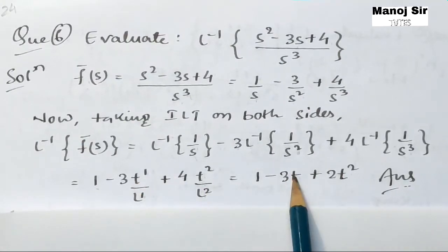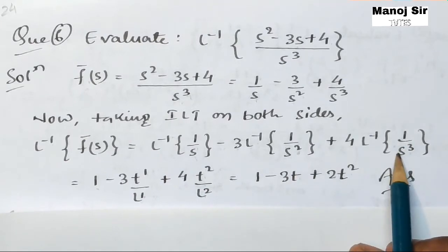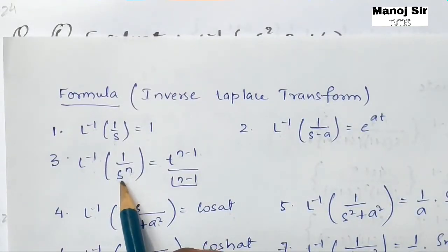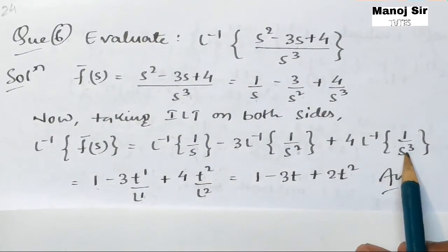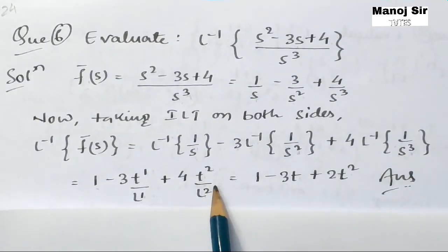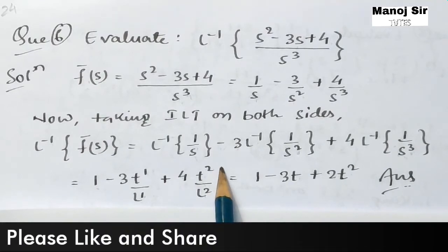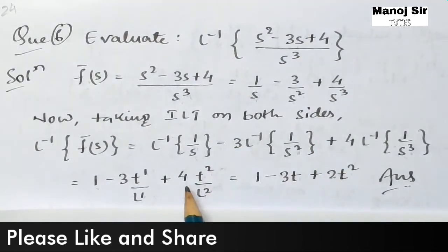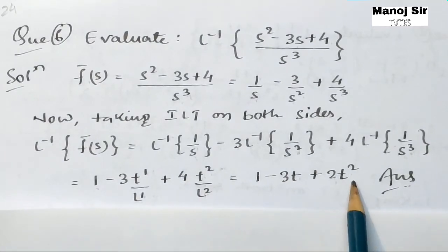For the last term, the inverse Laplace transform of 1/s³: here n = 3, so the formula gives t^(3-1) / (3-1)! = t² / 2! = t² / 2. Therefore 4 times t²/2 equals 2t². Combining all terms, the final answer is 1 - 3t + 2t².